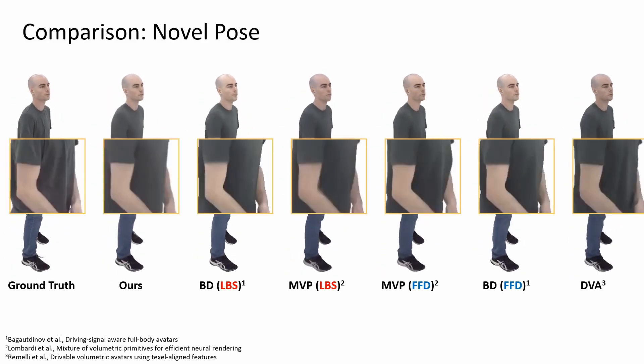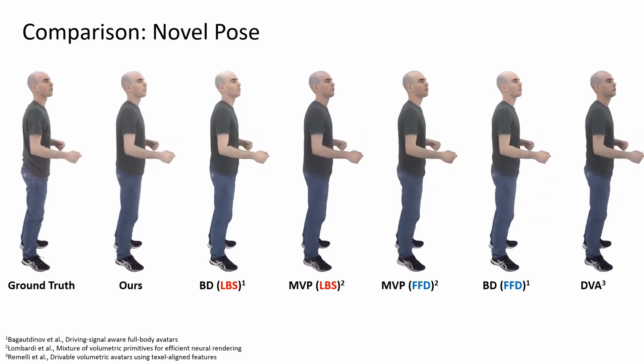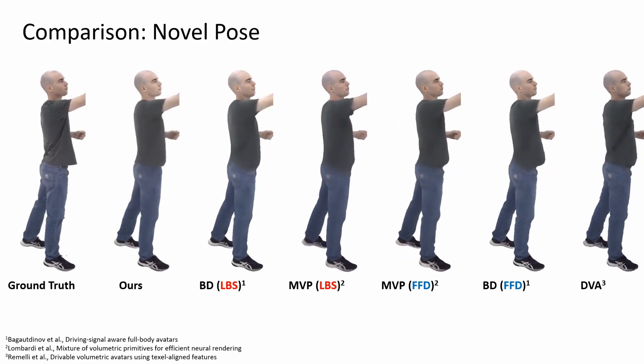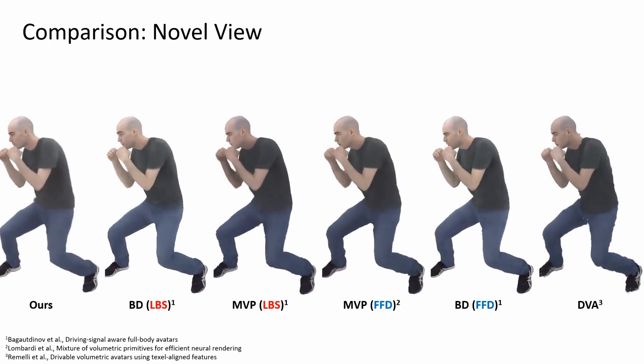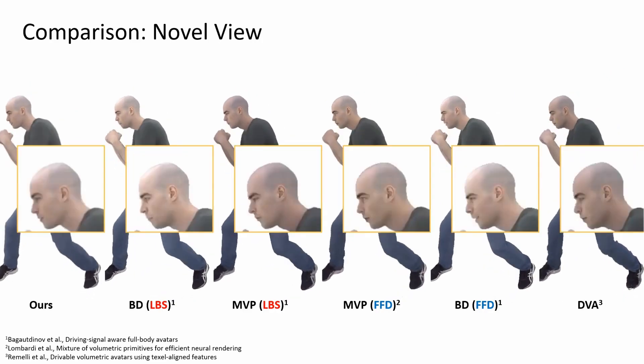However, the level of detail on the garment — the wrinkles and self-shadows — are still not handled properly compared to densely conditioned DVA. Finally, you can see that MVP does not capture the view-dependent effect correctly, compared to body decoder or DEGA.